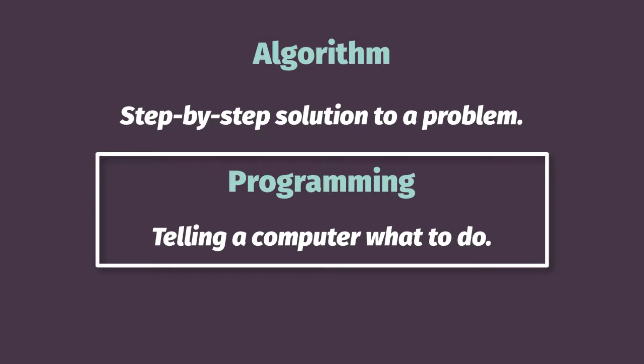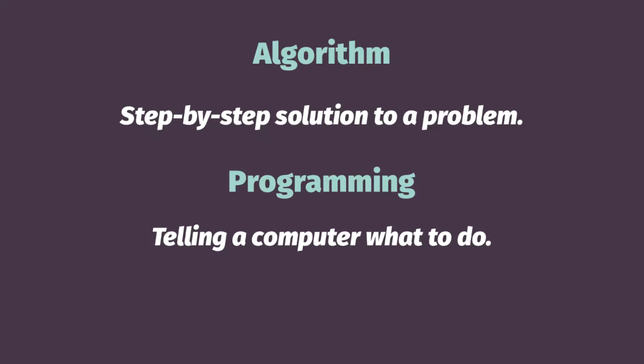Programming. Once we define an algorithm, or a way to solve a problem, we're going to write a program. At the simplest level, a program involves telling a computer what to do. We'll look at different languages and different ways of telling a computer what to do this semester, but essentially that's all programming is. Computers are very literal — they cannot imply any type of context, so we need to be very specific when we tell them what to do. The algorithms that we define need to be very specific so that when we tell a computer what to do via a program, it knows what to do.